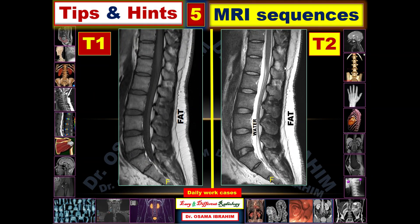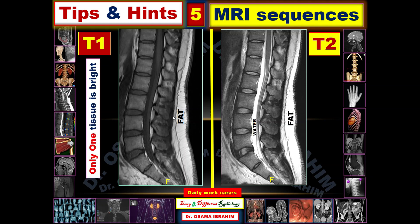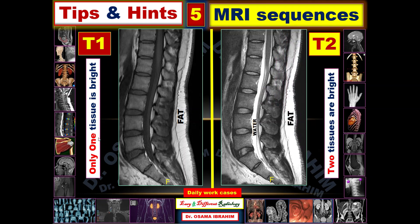Looking at these two MRI sagittal views of the lumbosacral spine, you can easily discriminate T1 from T2. In T1, there is one type of tissue appearing bright: fat, which appears bright in the subcutaneous regions, epidural spaces, and bone marrow within the vertebral bodies. In T2, two tissues appear bright: water in the CSF canal and fat. Water also appears bright within the nucleus pulposus of the intervertebral discs. So T1 has only one bright tissue, while T2 has two.